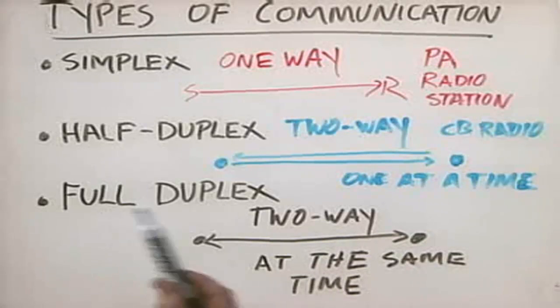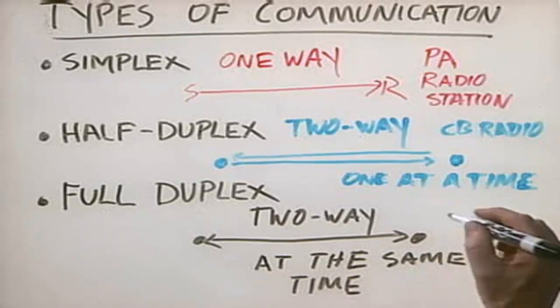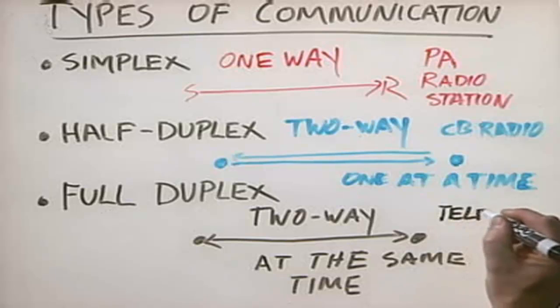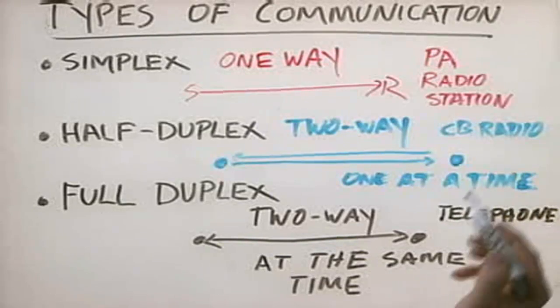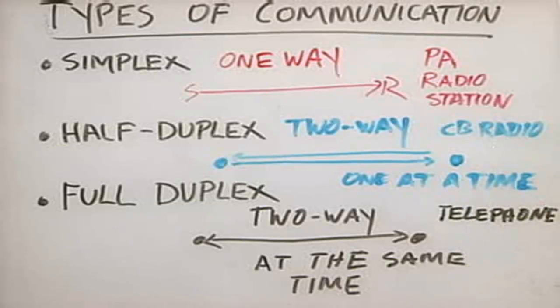A good example of full duplex communications would be a telephone. With a telephone, unlike a CB radio or walkie-talkie, you can talk and you can listen at the same time. If you're a chatty person and you're talking to a chatty person, that's very likely to happen. You can be talking and the other person's talking, and you're listening and talking all at the same time.